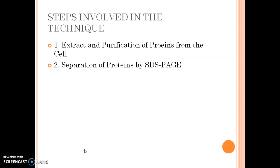What are the steps involved in the western blotting technique? The first step is extraction and purification of the proteins from the cell. The second step is separation of proteins by SDS-PAGE — that is, Sodium Dodecyl Sulfate Polyacrylamide Gel Electrophoresis.